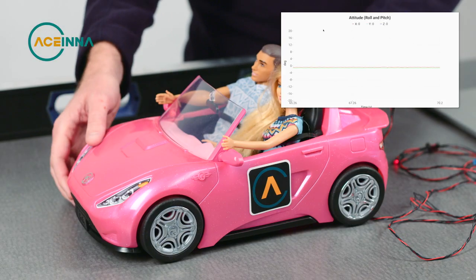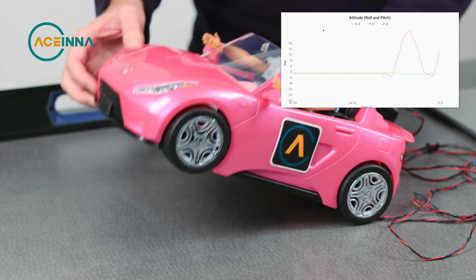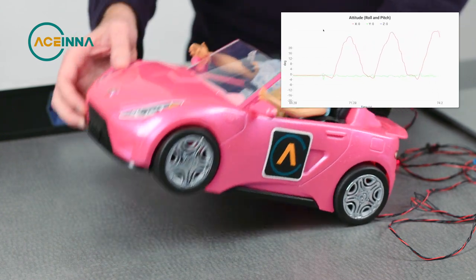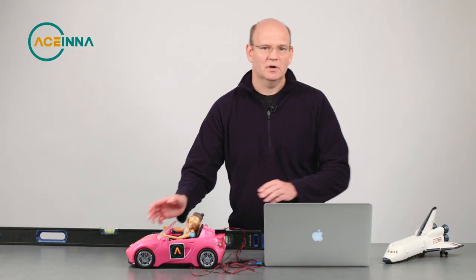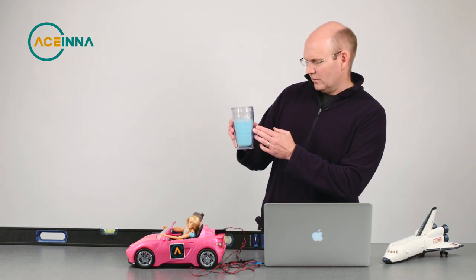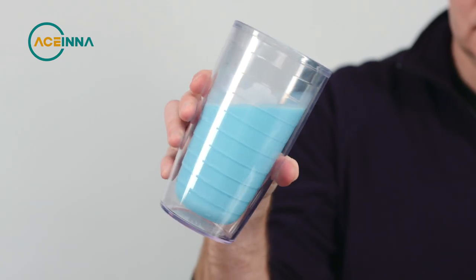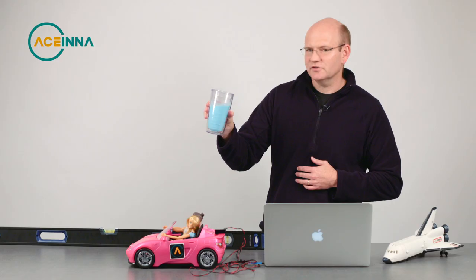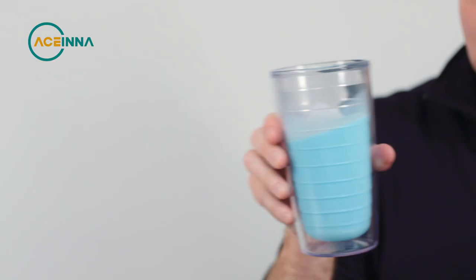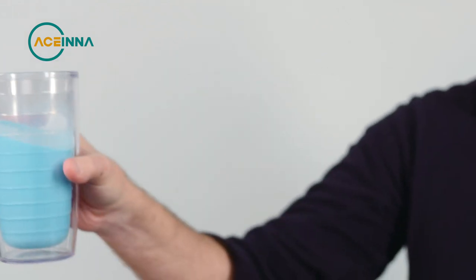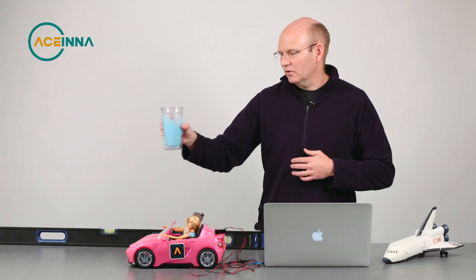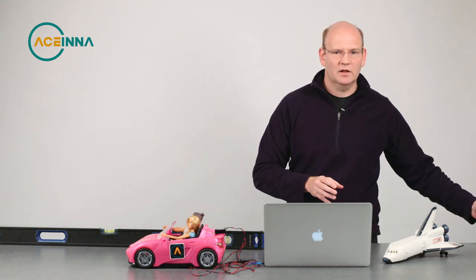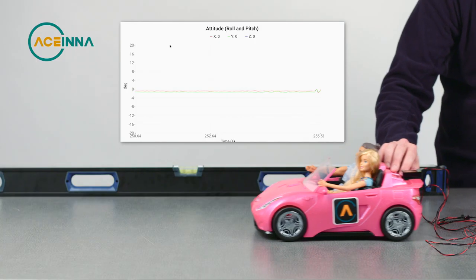So, we set this up and we can see the tilt response of Barbie's car live. Now, we can do the same experiment with the simple glass of milk. Why is this milk blue, by the way? Well, what we can see with this blue milk is that it responds to tilt angle, just like the carpenter's level. But not only does that milk respond to the tilt angle, it responds vigorously to linear acceleration. And that's the problem with an accelerometer.